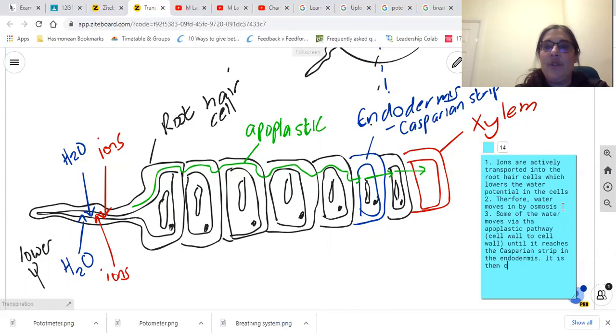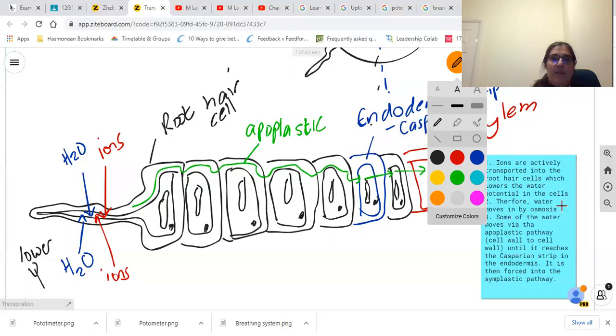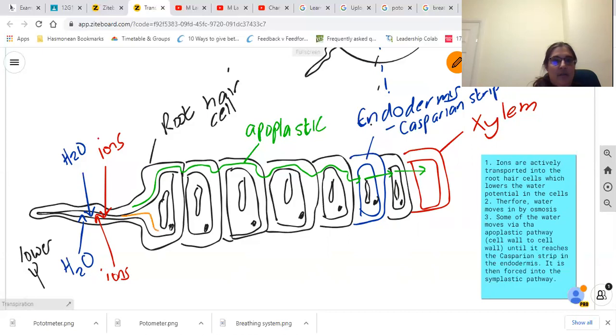It is then forced into the symplastic pathway. What is the symplastic pathway? The symplastic pathway is the other way in which water moves, which is via the cytoplasm. So it comes in, goes via the cytoplasm, not through the vacuoles, connects through the plasmodesmata chains, and literally goes that way through. That's not a problem for the endodermis, all the way until it reaches the xylem.